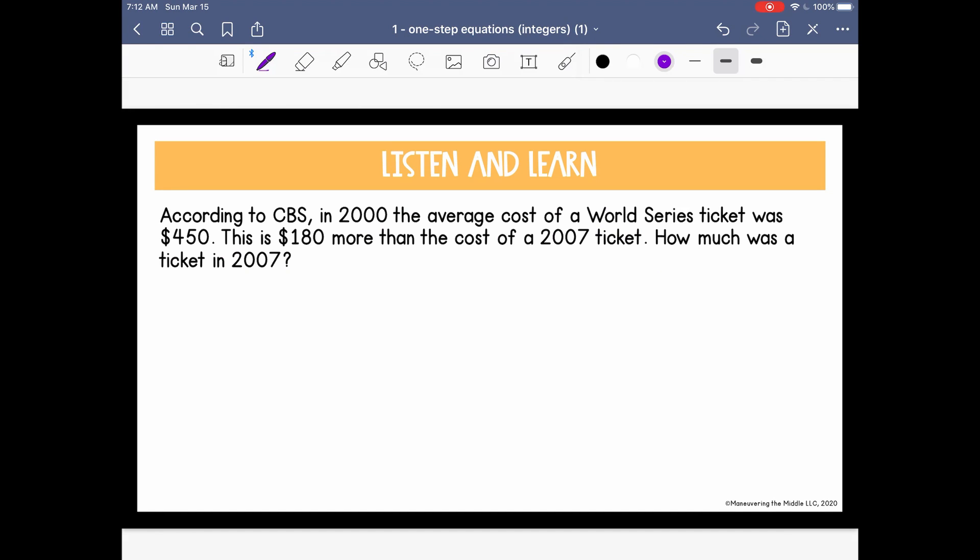Now we can see how word problems apply to real world situations. This question says, according to CBS, in the year 2000, the average cost of a World Series ticket was $450. This is $180 more than the cost of a 2007 ticket. How much was a ticket in 2007? So I like to think about what information the question is giving me. Well, the question is asking how much a ticket was in 2007. So I want to know the cost of a ticket. We don't know that, so we're going to use x to represent that.